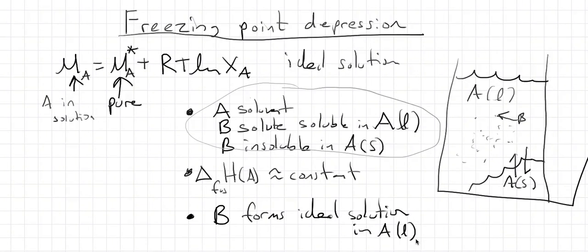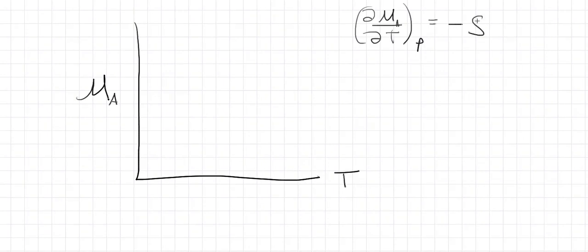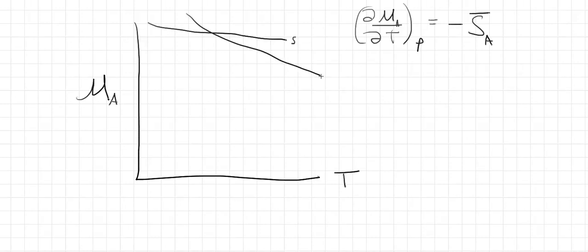Let's see if, given all three requirements, we can get an equation for how the freezing point goes down. First, let's understand why it goes down using a μ-T graph. We plot the chemical potential of component A versus temperature, remembering that the slope of chemical potential with temperature is negative of the molar entropy. This gives negative slopes, with solids having a shallower slope than liquids, and gases having the steepest slope.